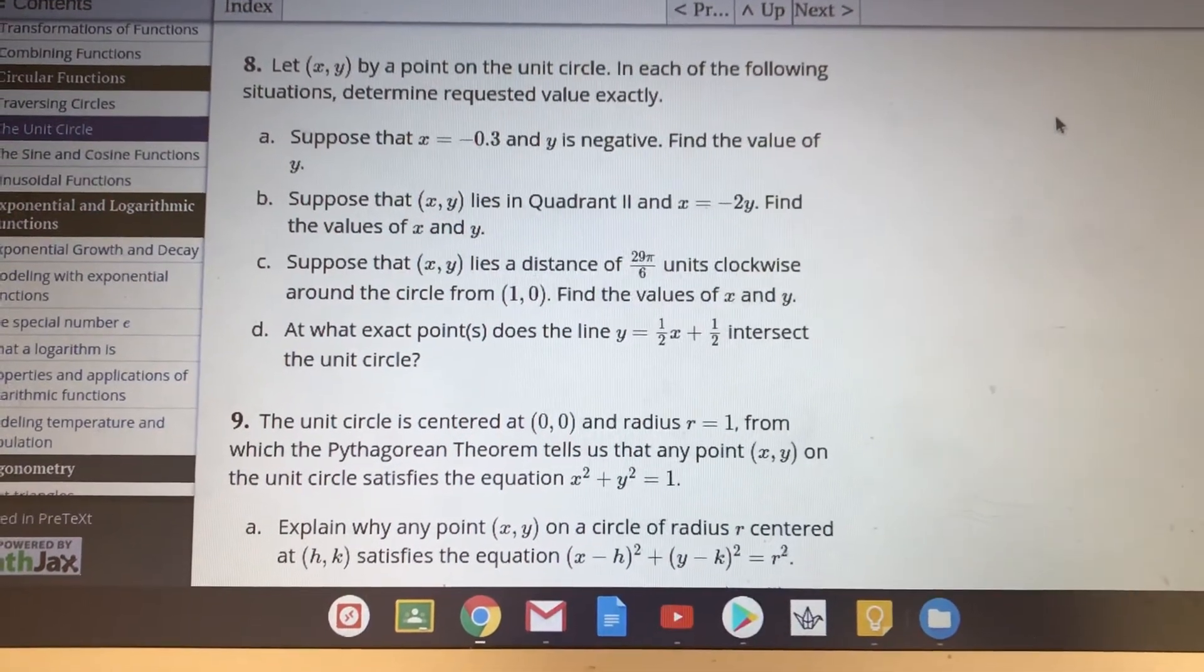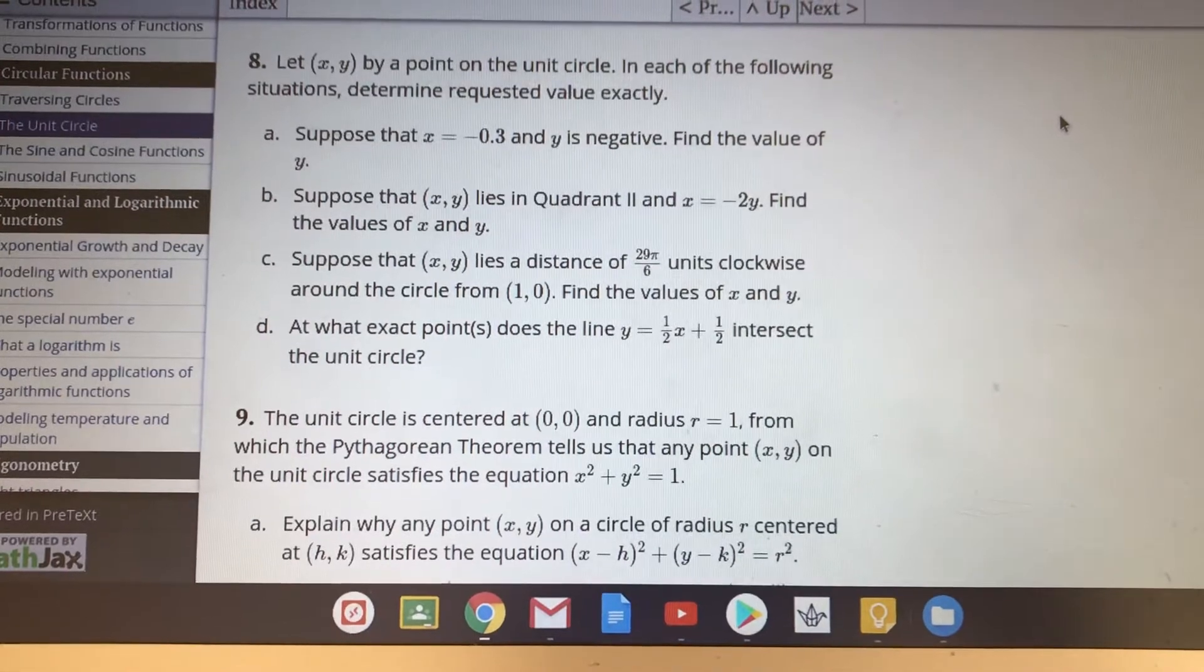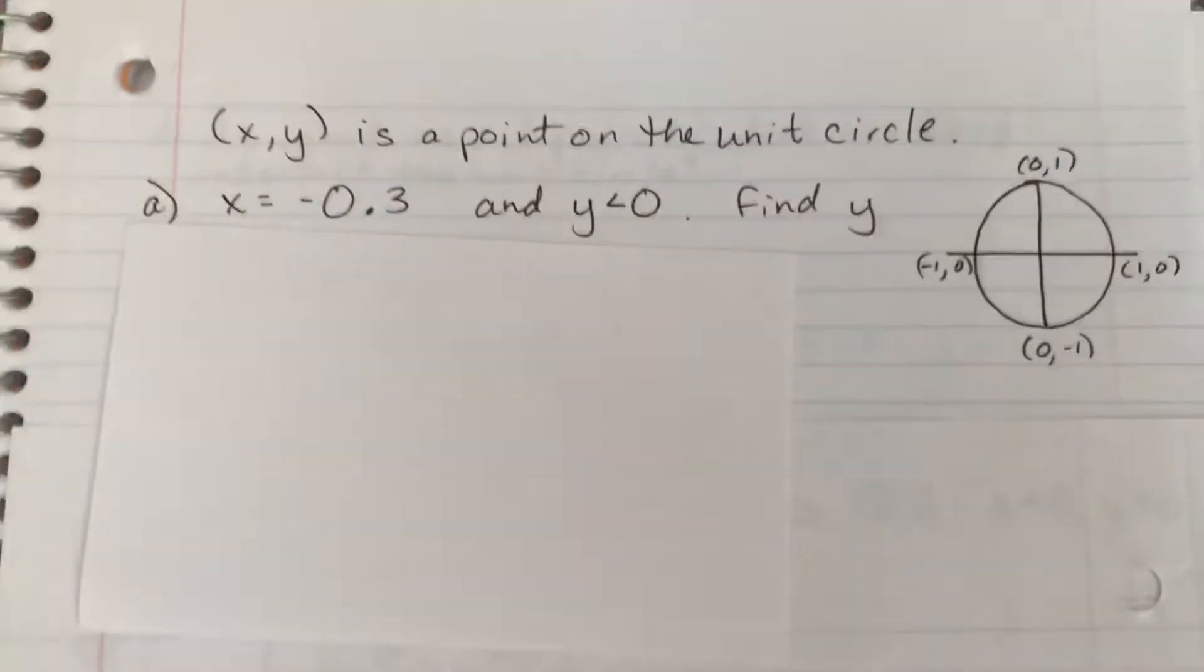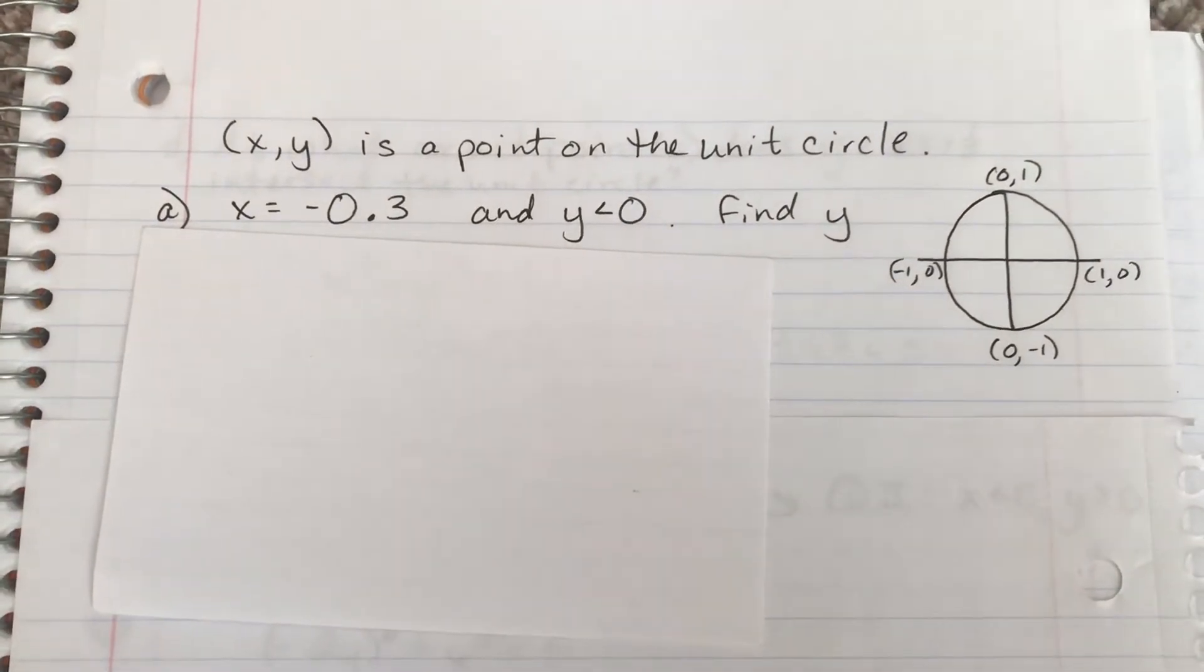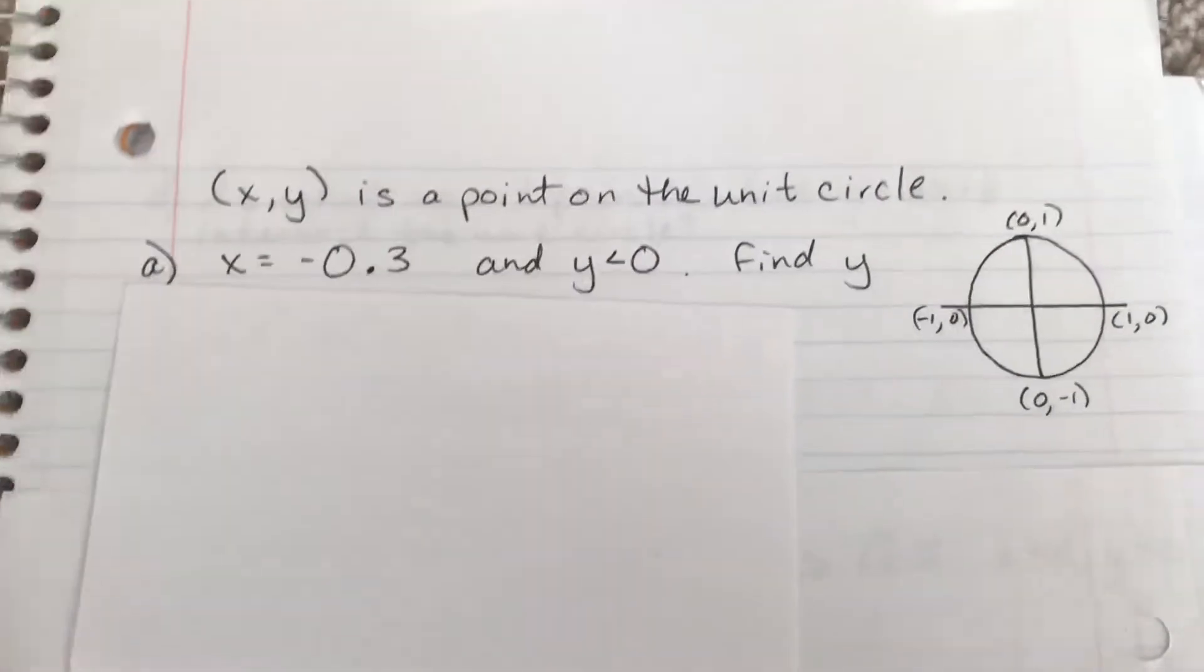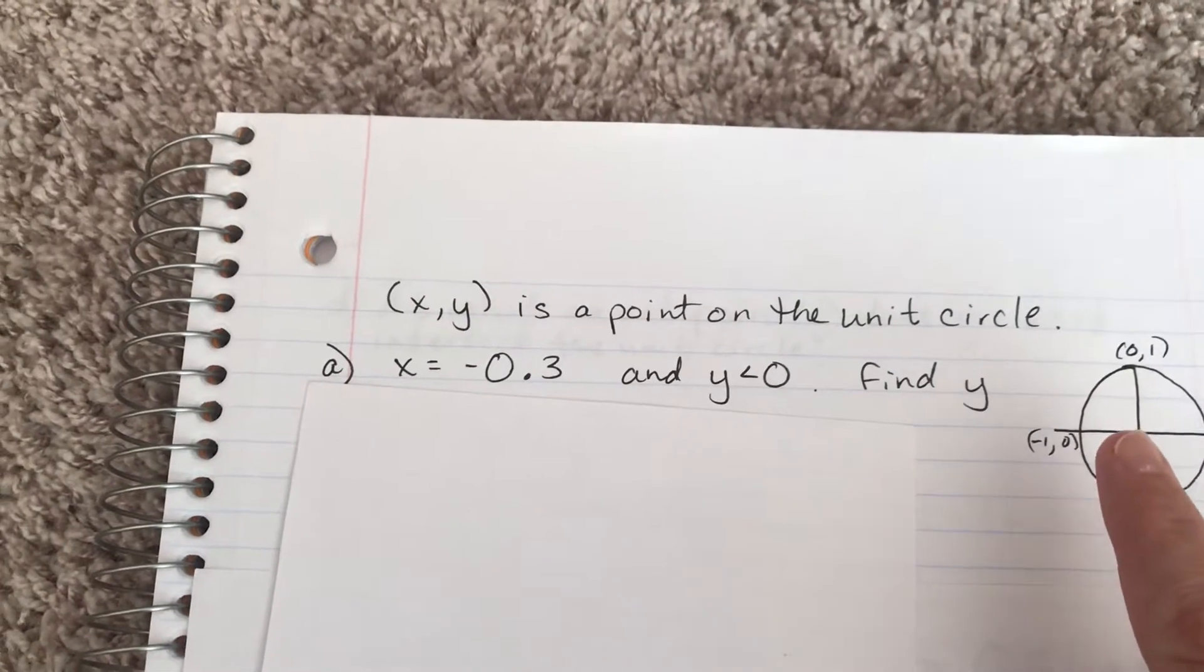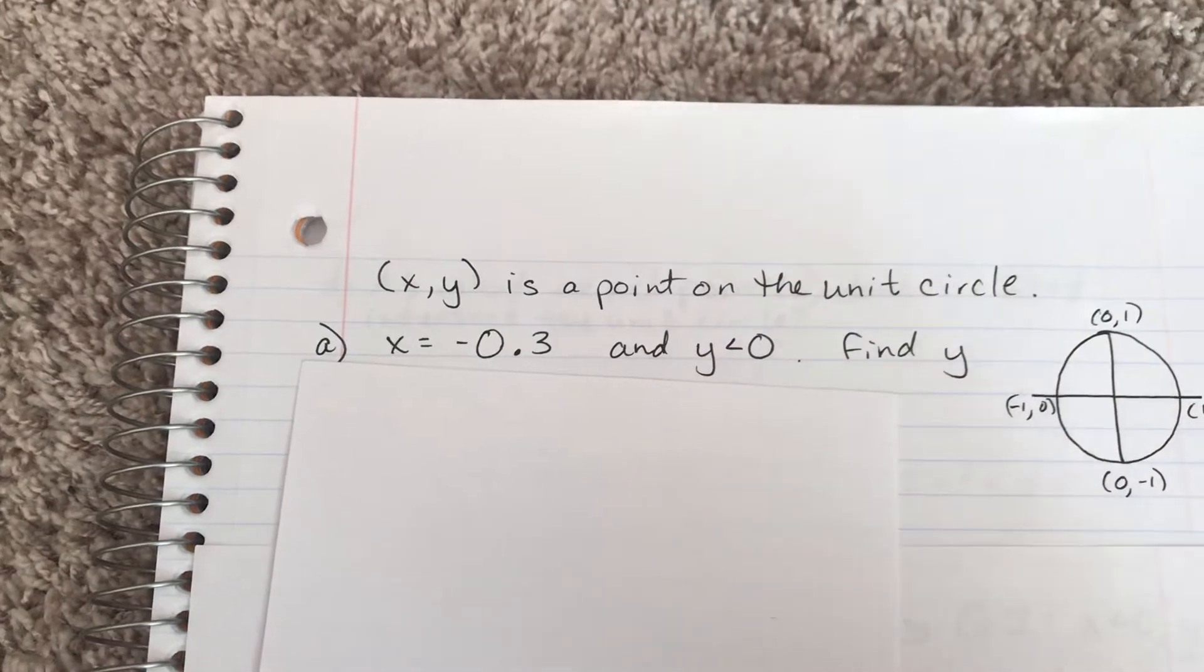Let's tackle part a. The first part is that we're given an x-value and we are given that y is negative. We're looking for a point on the unit circle, trying to figure out the y-value of that point. We're given the x-value is negative 0.3, so we know we're over here. And since y has to be negative, we know that we're down in the third quadrant.